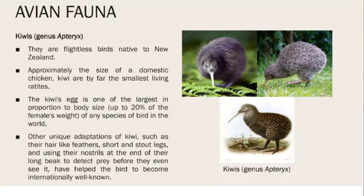The kiwi is present in New Zealand and is approximately the size of a domestic chicken. It is notable for having one of the largest eggs in proportion to body size — about 20% of the female's weight. Unique adaptations include hair-like feathers, short and stout legs, and nostrils at the end of a long beak used to detect prey even before seeing it.